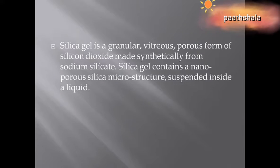Silica gel is a porous form of silicon dioxide, basically made from sodium silicate. Silica gel contains a nano-porous silica microstructure suspended inside a liquid - it is a ball-like structure containing silicon dioxide. Silicon, also known as quartz or sand, reacts with oxygen to make silicon dioxide. It is basically not directly harmful, but it can react with certain content and cause serious health issues, so please don't try to eat it.